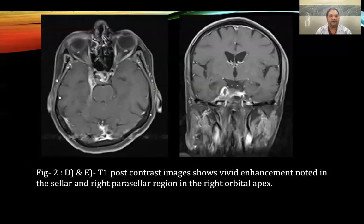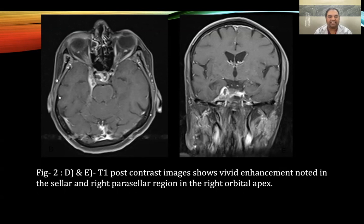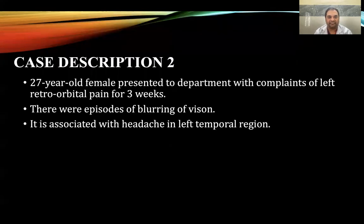Figure 2: D and E are post-contrast T1 images of axial and coronal cuts showing vivid enhancement in the sellar and right parasellar region in the right orbital apex.